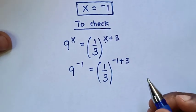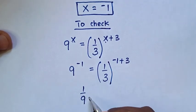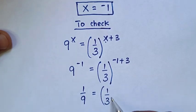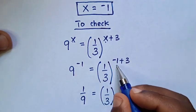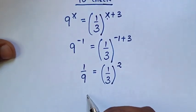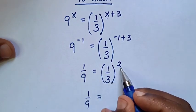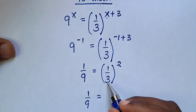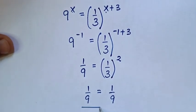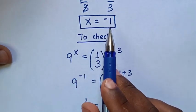Then, from the exponent, 9 power of negative 1 as a fraction is 1 over 9, equal to 1 over 3, bracket power of negative 1 plus 3, which is power of 2. Then it will be 1 over 9 is equal to 1 squared is 1, 3 squared is 9, so it will be 1 over 9. Left side and right side are equal, therefore it is true for the value of x is equal to negative 1.